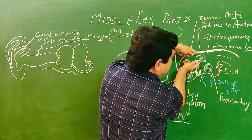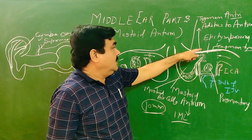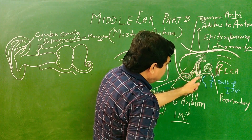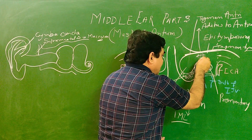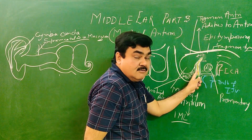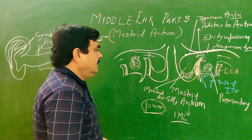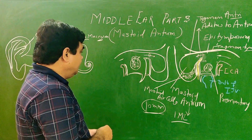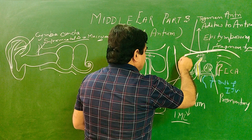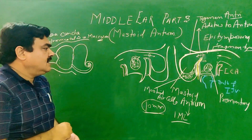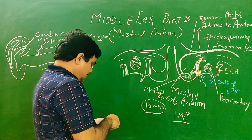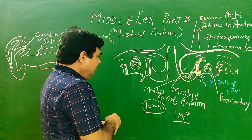The upper part communicates with the epitympanum and the middle ear. The lower part is related to the facial canal — here lies the facial canal, and through this canal the facial nerve passes. The posterior part is related to the sigmoid sinus.